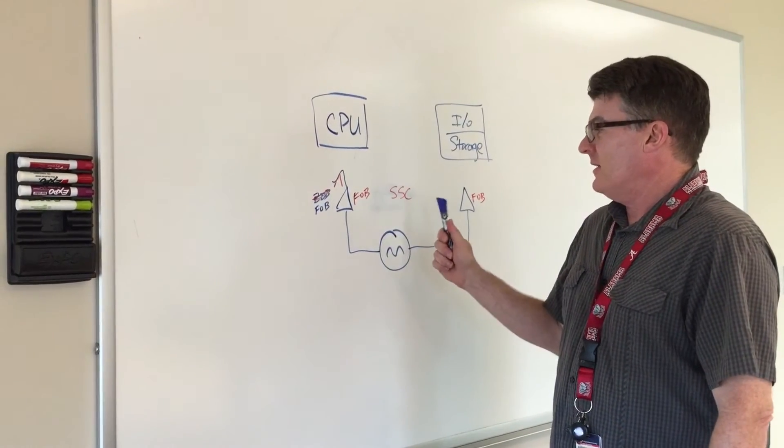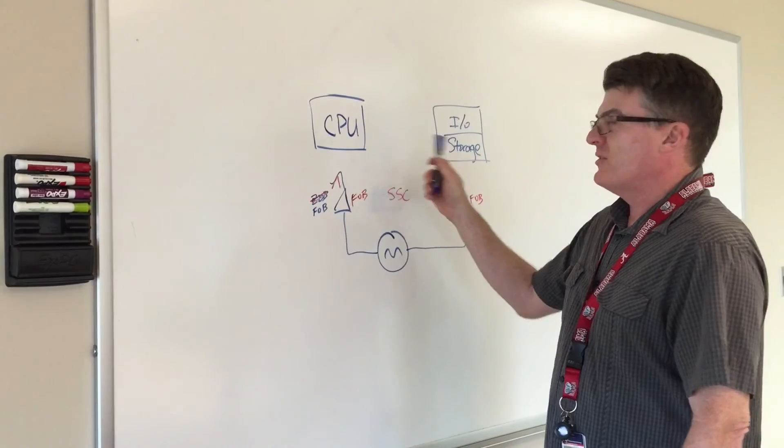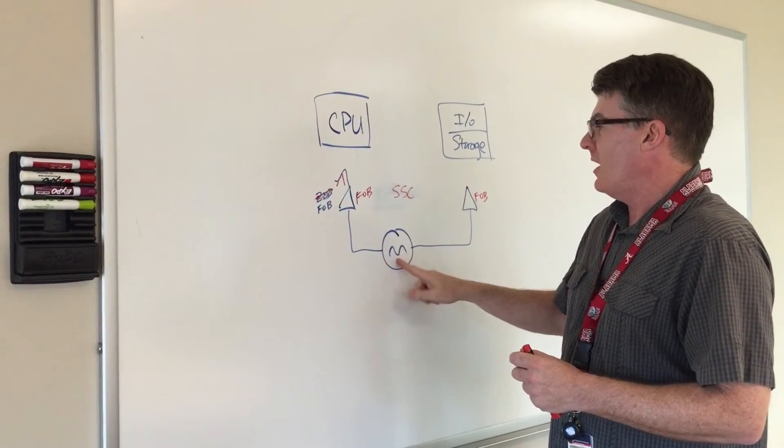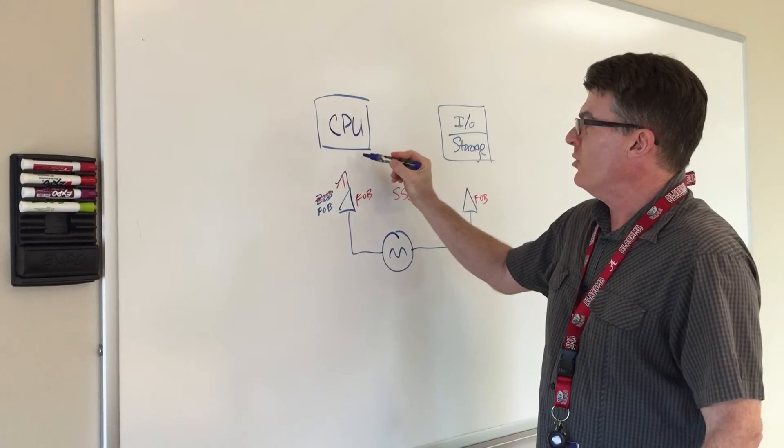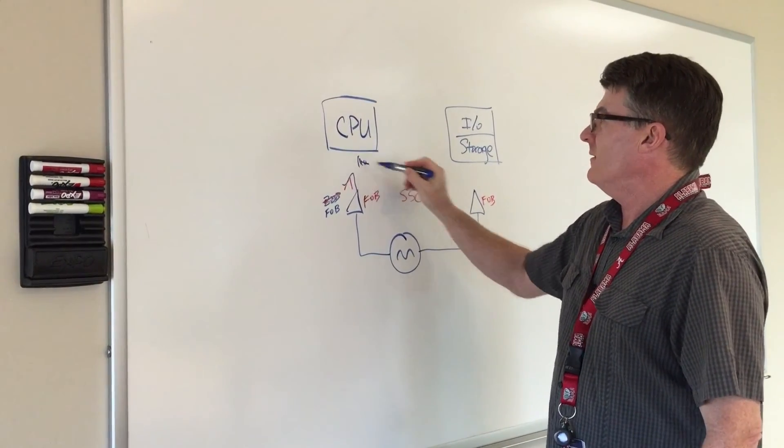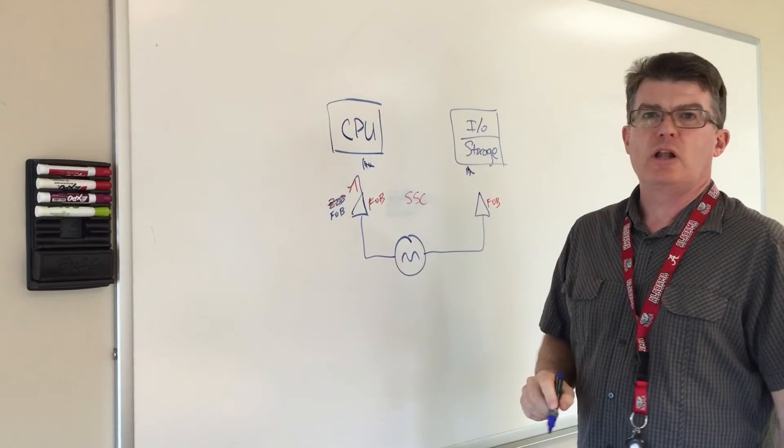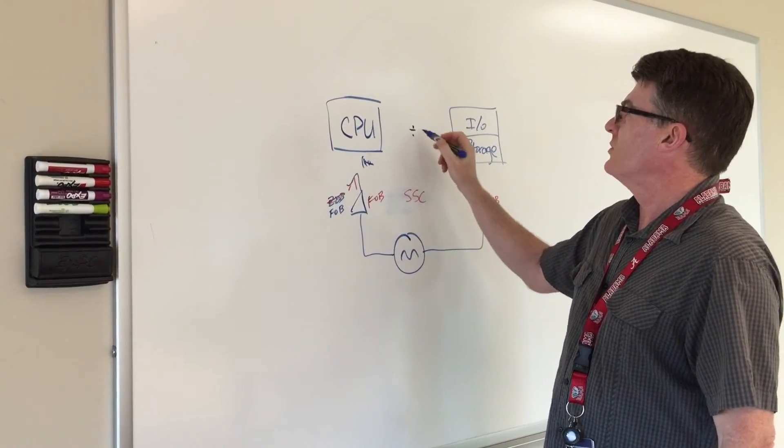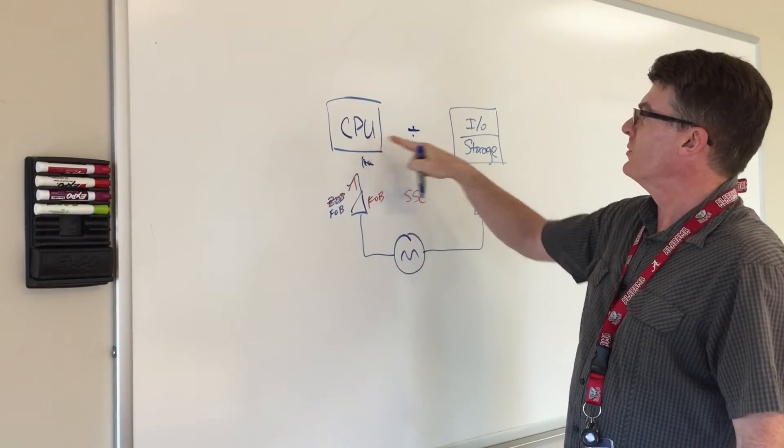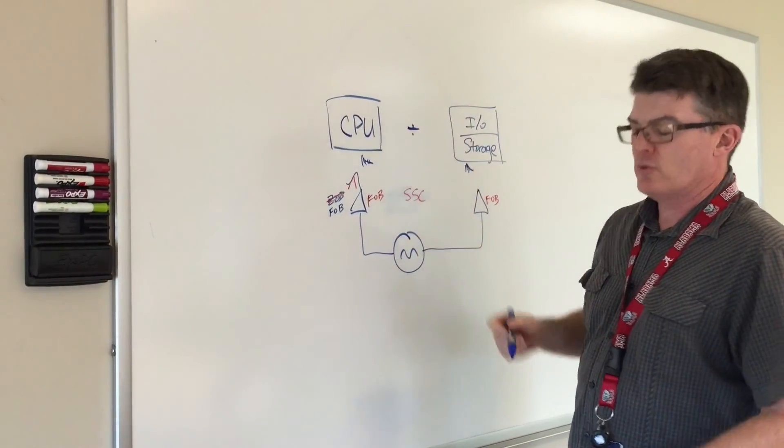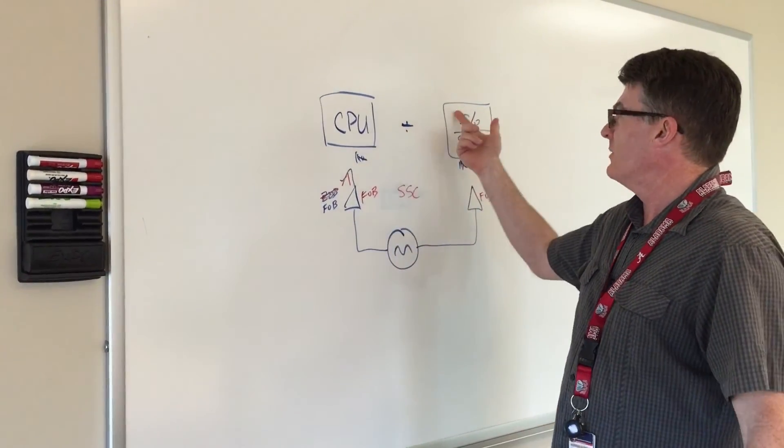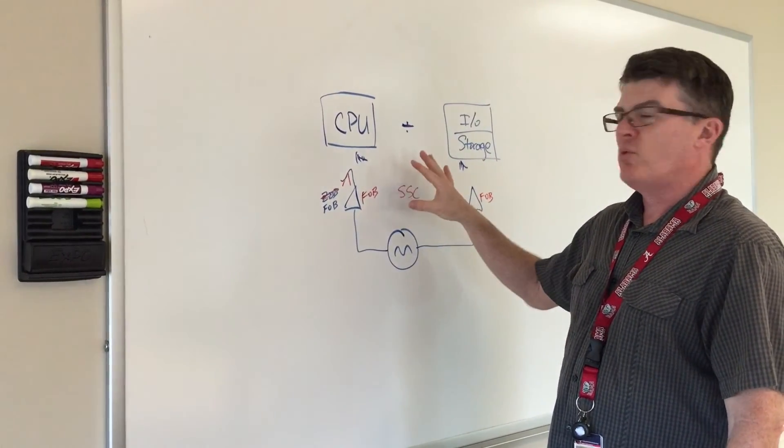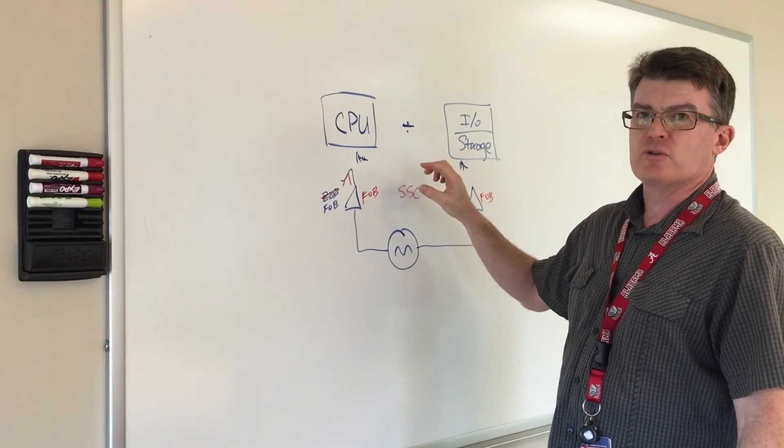So the other point I'd like to make is, as far as the jitter is concerned, because we're using a common clock here, let's assume that the jitter on both sides for the clock is the same, and all we have to do is take the difference function, the difference between the CPU and the transmitter, CPU transmitter, say in the IO storage receiver, to calculate our jitter. That'll be more important when we get to the separate clocking in a future video.